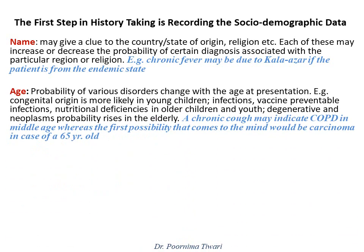Next is the age of the patient. The probability of various disorders changes with the age at presentation of symptoms. Congenital origin diseases are most likely to present in very young children. Infections, vaccine-preventable diseases, and nutritional deficiencies tend to present in older children or youth, whereas degenerative diseases and neoplasms increase in probability with increasing age. For example, a chronic cough may indicate COPD in a middle-aged smoker, whereas carcinoma would be the first possibility if the patient is 65 years or older.